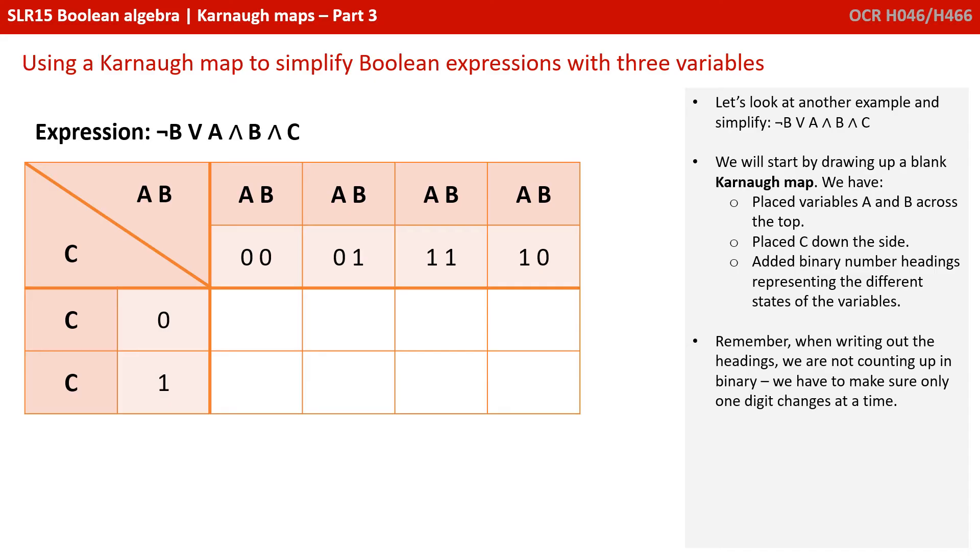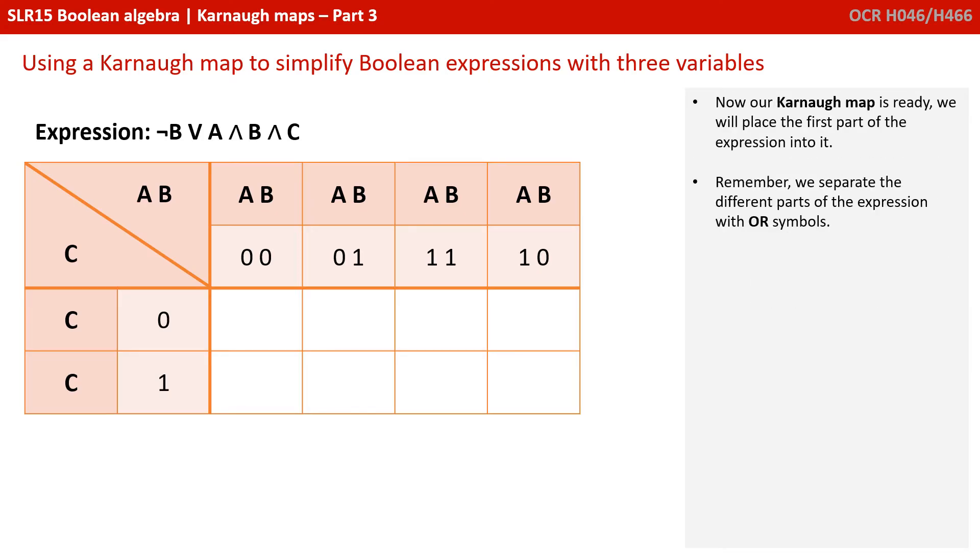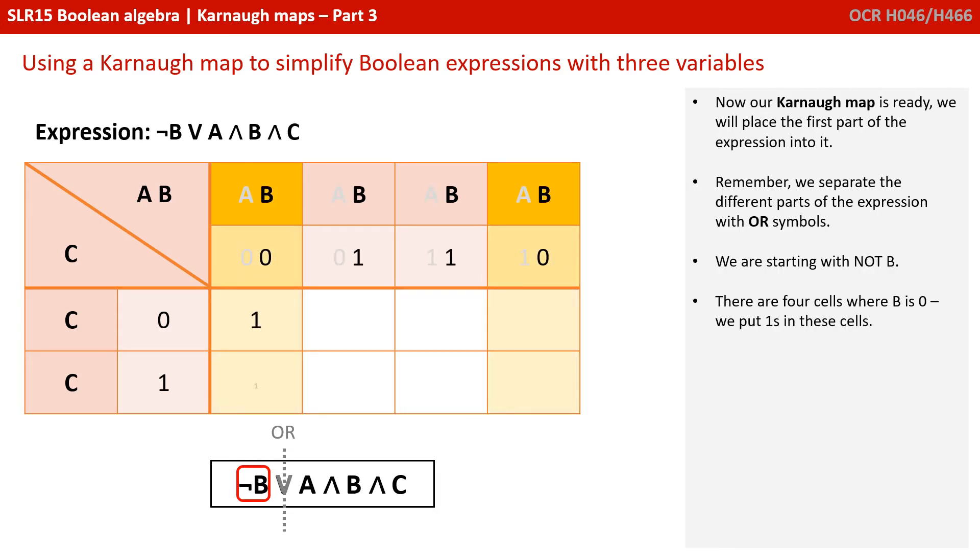Remember, when writing out the headings, we're not counting up in binary. We have to make sure only one digit changes at a time. Now our Karnaugh map is ready, we will place the first part of the expression into it. Remember, we separate the different parts of the expression with OR symbols. So, we're starting with NOT B. There are four cells where B is zero. And we put ones in those cells.